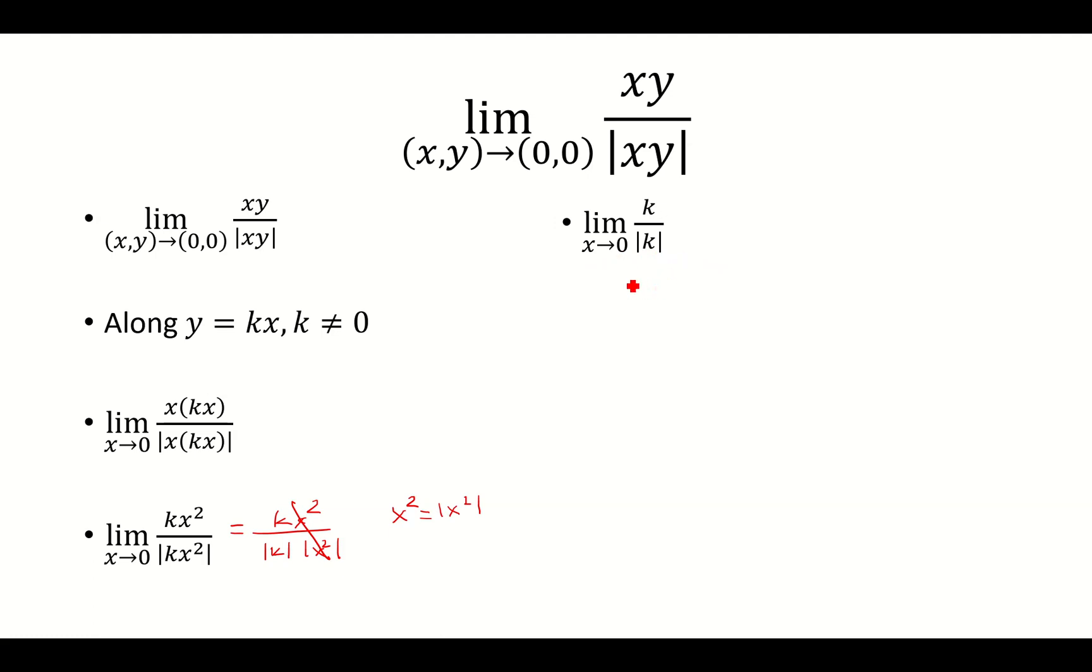And for that, it really depends on what k is. So if k is negative, the absolute value of k will just be negative k. And then you have k over negative k gives me negative 1. But if k is positive, absolute value of k is k, and the limit there is 1.